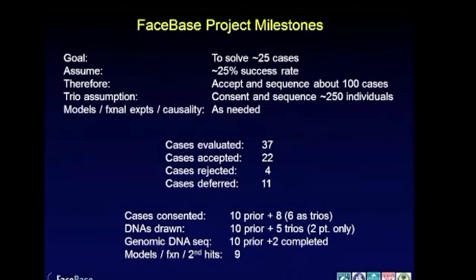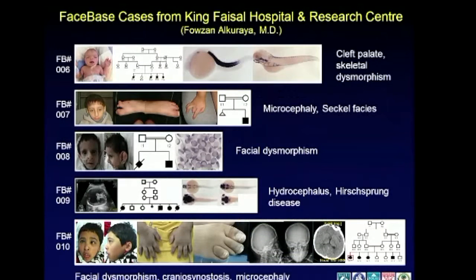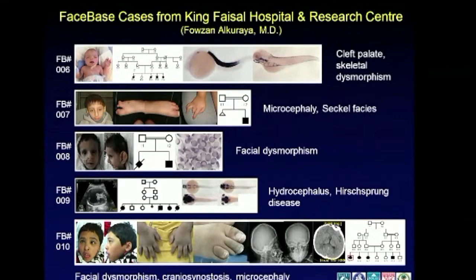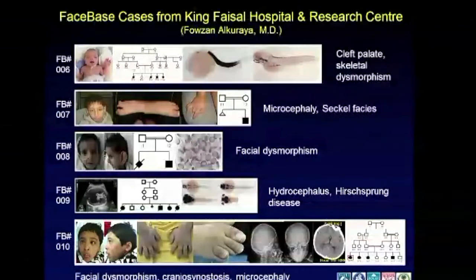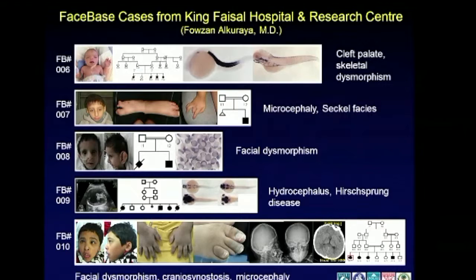Some interesting cases — this project sets a tension between depth and breadth. We'd like to find causal variants for these cases, but we can't study any of them in depth under this grant. This is a case of cleft palate from our collaborator at King Faisal Research Institute and Specialist Hospital in Riyadh, Saudi Arabia. These cases tend to be consanguineous pedigrees — rampant in the Middle East — making them very easy to solve genetically. The cases also tend to be very unusual, things we don't typically see in Boston.